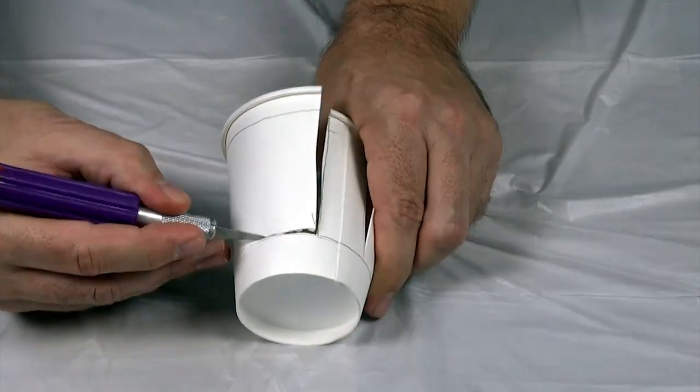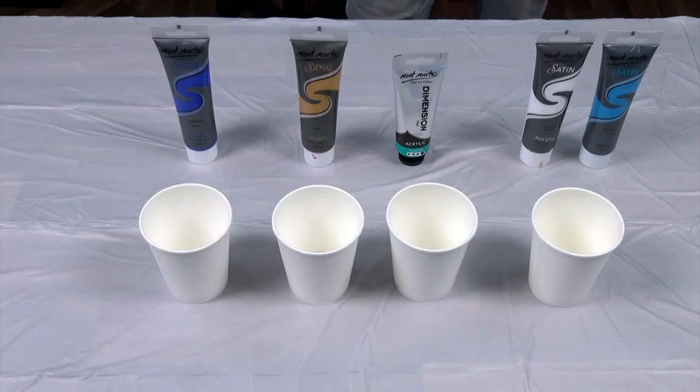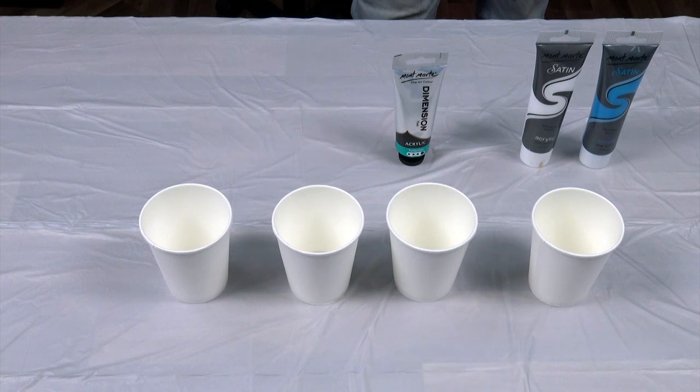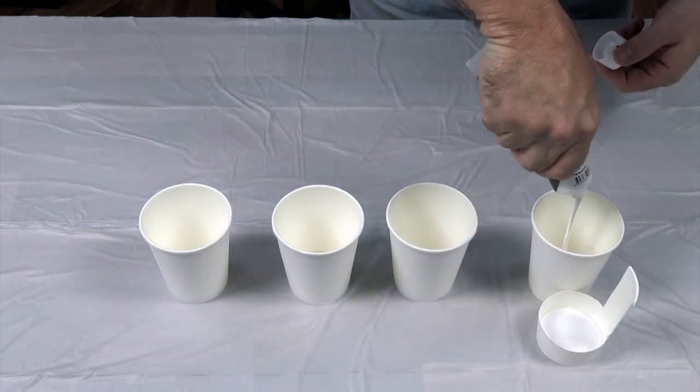Now we have a handle we can use to measure ingredients accurately. For this pour we're going to use ultramarine, gold, turquoise, and a light blue made from cerulean blue and Chinese white.